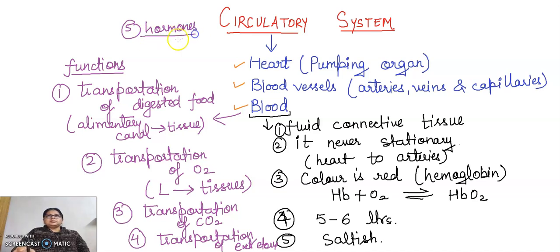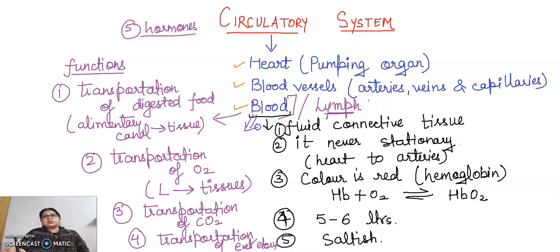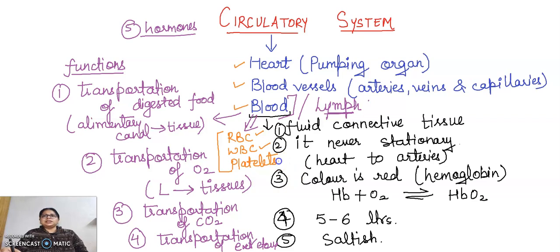Blood is similar to lymph, but how is it different? Lymph contains WBC only, whereas blood contains RBC, WBC, and platelets. RBC are also known as erythrocytes, WBC are known as leukocytes, and platelets are known as thrombocytes. These are the blood cells, and along with them, plasma is also present in the blood.